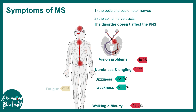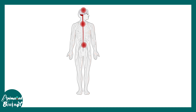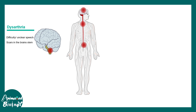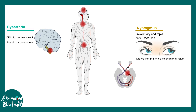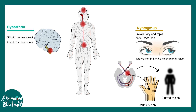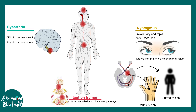Additional symptoms include dizziness, weakness, fatigue, and cognitive dysfunction, though these appear in variable percentages depending on ethnicity and geographical location. Common classifying criteria include dysarthria — difficulty and unclear speech due to scars in the brainstem — nystagmus (involuntary rapid eye movement) from lesions in the optic and oculomotor nerves causing blurred or dull vision, and intention tremor from lesions in the motor pathway. These three symptoms together form Charcot's triad.